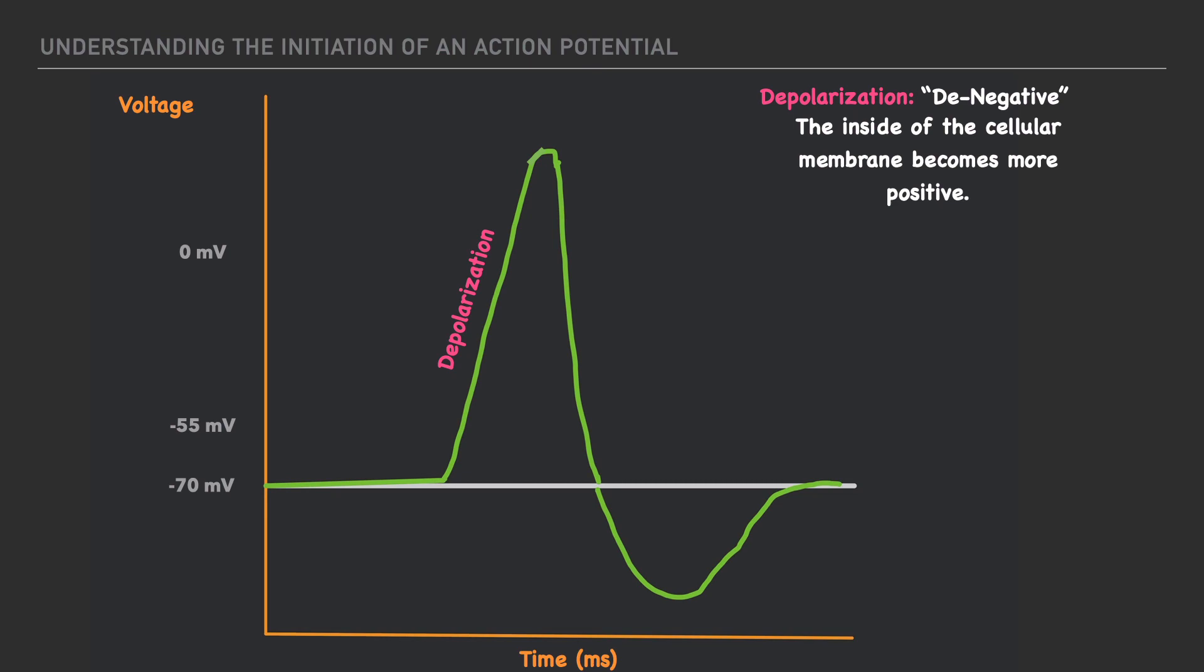Now, as the inside of the cell becomes more positive, and it reaches a value of roughly 30 millivolts, it's reached its peak. And soon, we'll begin to see that the inside of the cell repolarizes.